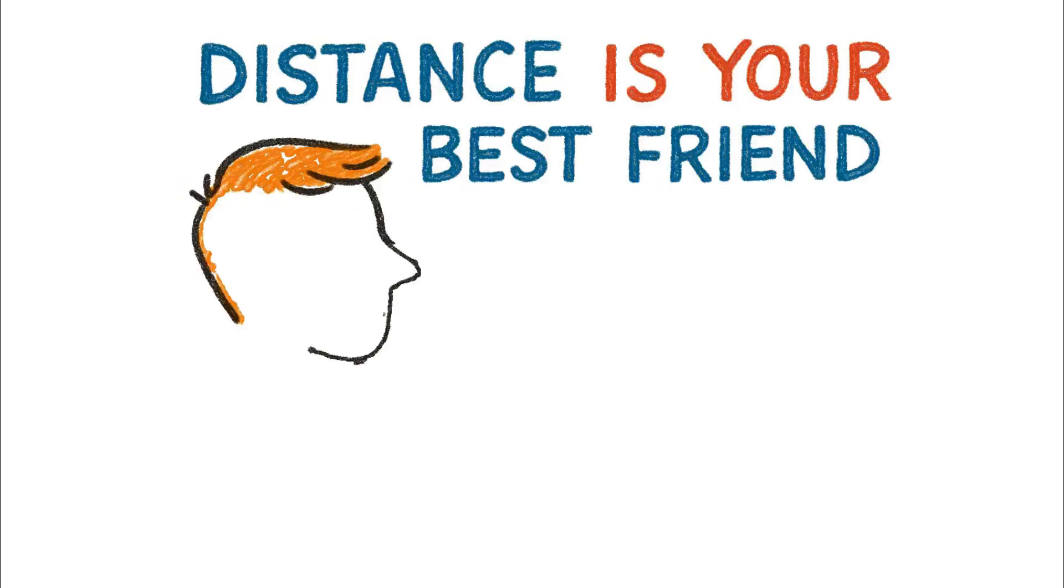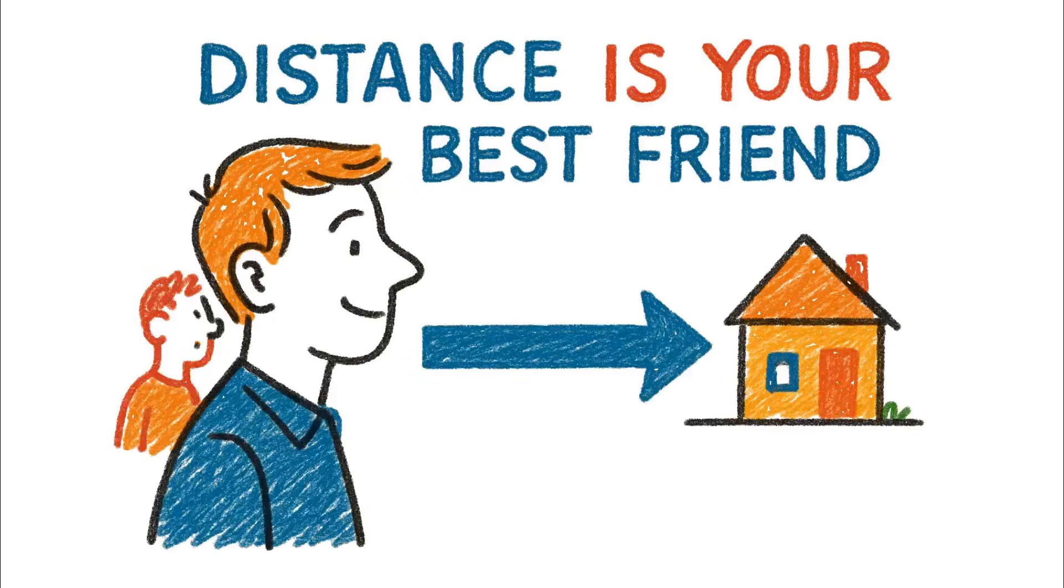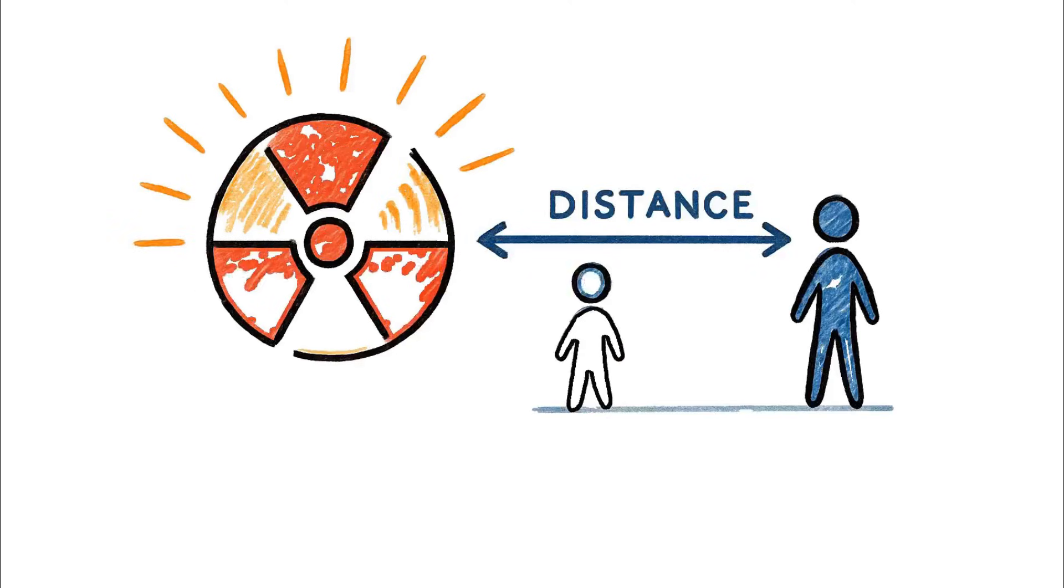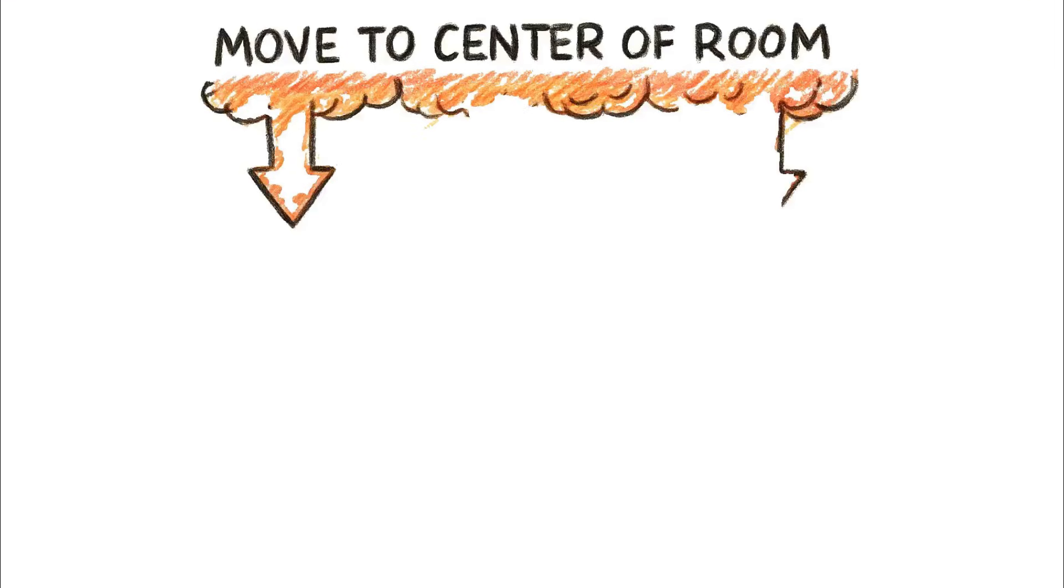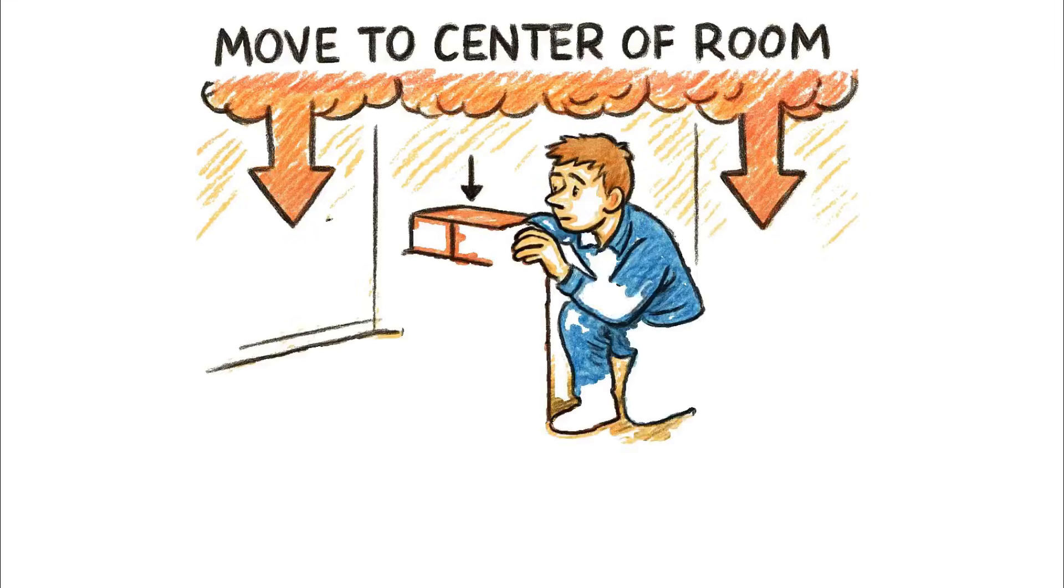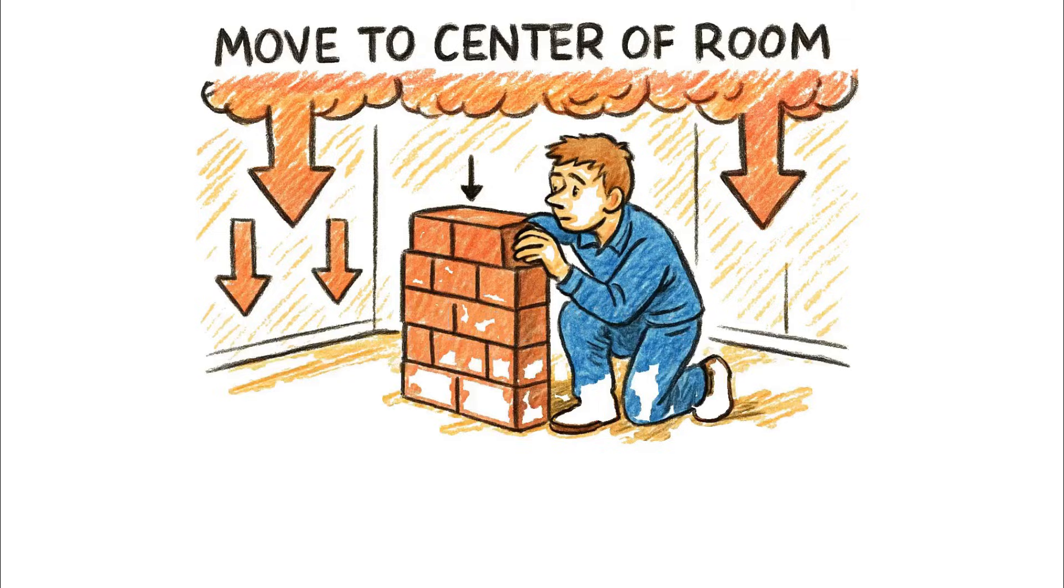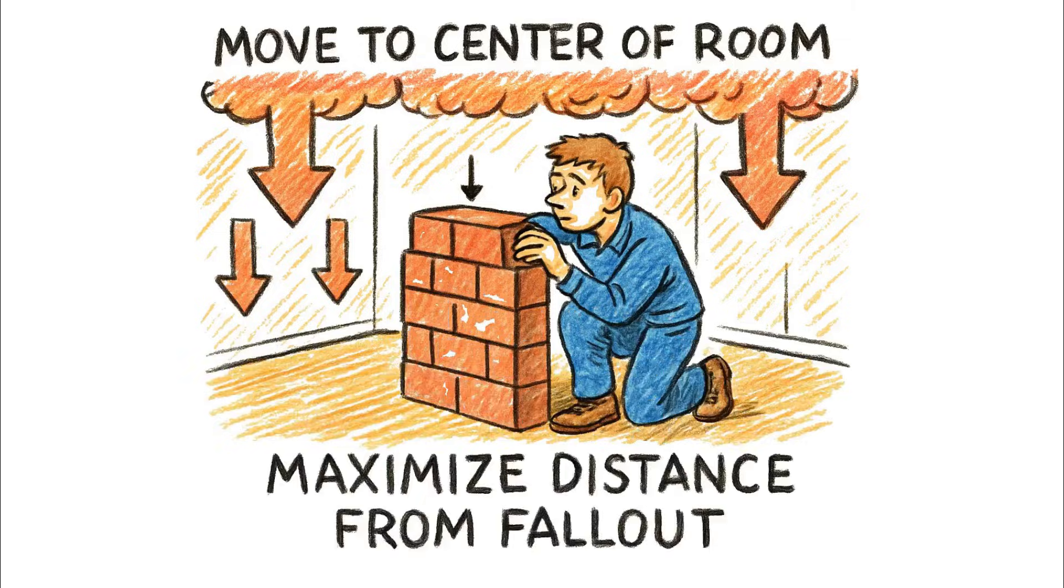In simple terms, distance is your best friend. Every time you double your distance from a radiation source, you cut your exposure down to a quarter. By moving to the center of the room and building this core, you maximize your distance from the fallout above and around you, drastically reducing your dose.